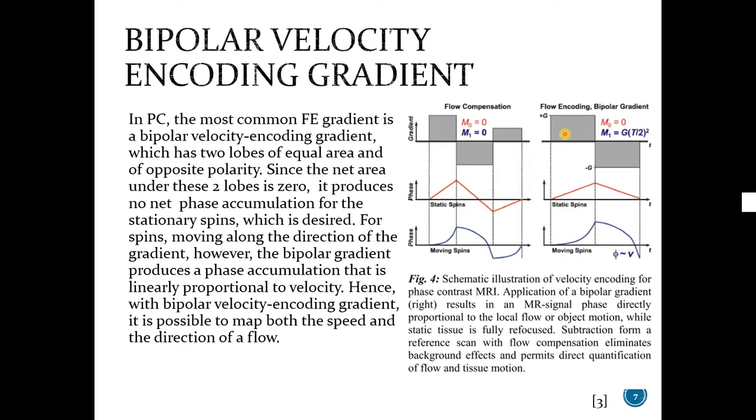As you can see, for the static spins, the net phase shift is zero. However, for moving spins, there will be a phase shift and it will be proportional to the velocity. With bipolar velocity encoding gradient, it is possible to map both the speed and the direction of a flow.